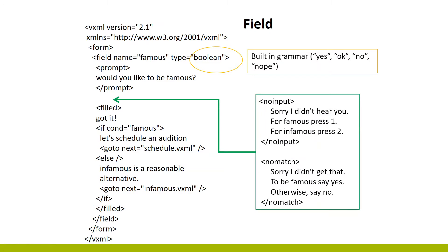Of course, people can say something unrecognizable or be completely silent, and you have these no-input and no-match handlers. For no-input, when someone is silent, you can say 'I didn't hear anything — please enter again,' or give another option. In this case, it's a combination: first voice input through the prompt, and if it doesn't work, a one-two DTMF option also processed by the same built-in grammar. For no-match, if something unrecognizable is said, the system responds that it doesn't recognize the word.